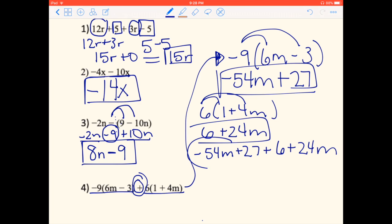I have 54M and 24M, so those are like terms. Then we have 27 and 6 by themselves. So I can take it and look at my like terms, the circled numbers. So negative 54M plus 24M. So negative 54 plus 24 gives me negative 30. And then I need to add my variable on, so never forget to have that variable. And then 27 plus 6 gives me positive 33. So I have negative 30M plus 33.